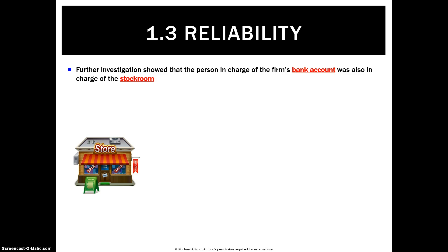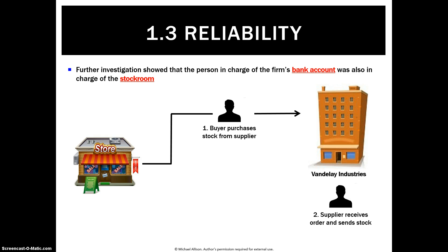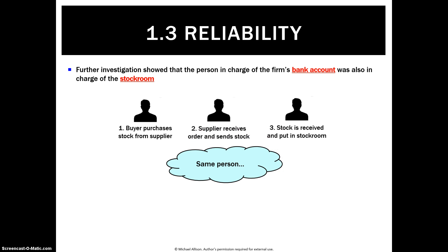So we want to make sure there isn't theft, fraud or misrepresentation. It's all about establishing good procedures. We want one person responsible for buying purchases from the supplier — they go to Vandelay Industries — and a separate person, person number two, who receives the order and sends the stock back to the business. A third person then receives the stock and puts it in the stock room. That's effective internal control because we've separated all the duties, so person one can't buy stock and steal it before it comes in. What if they're all the same person — what if person one has set up Vandelay Industries on the side? That's really poor internal control, leaving yourself open to theft and misrepresentation.